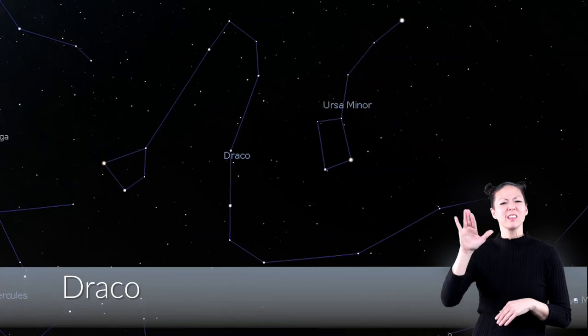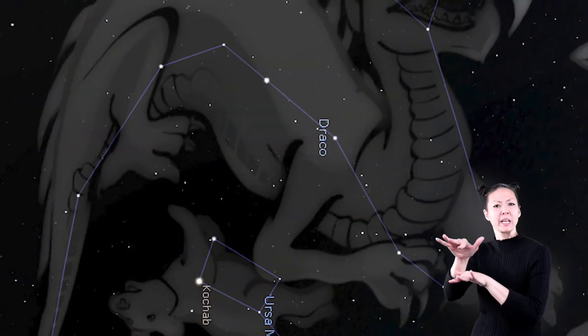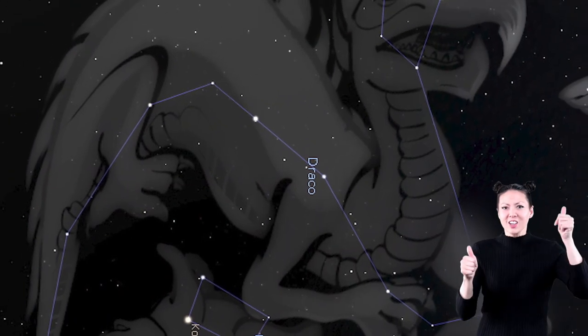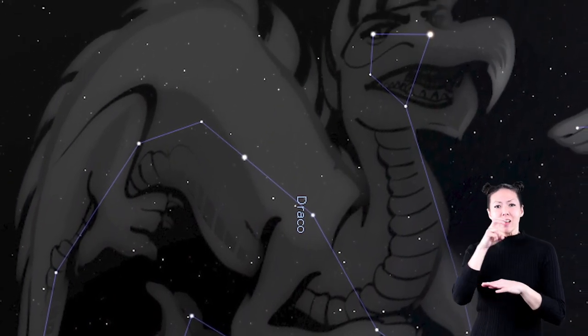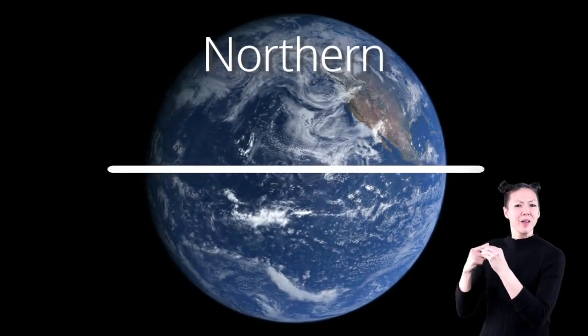Draco is Latin for Draconum, which means large serpent or dragon. This constellation looks like a large snake making its way through the northern sky. It can be seen all year from the northern hemisphere.